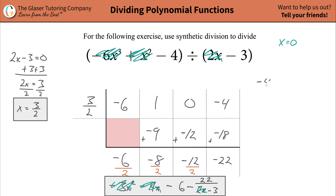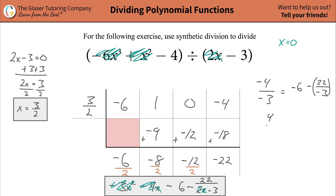So you're left with negative 4 in the numerator divided by negative 3 — which works out to be positive 4 thirds. And that's going to equal, on the quotient side, negative 6 minus 22 over negative 3. The double negative makes that a positive 22 over 3. So we need to add these together with common denominators.